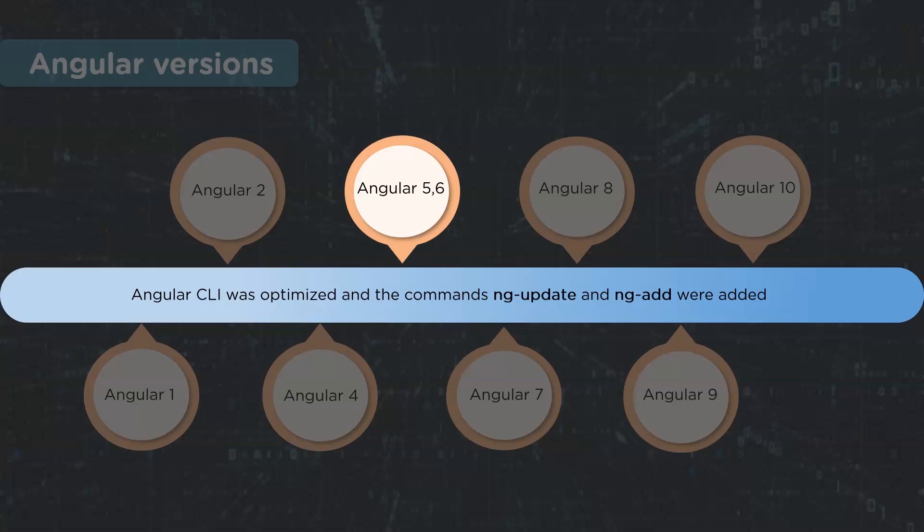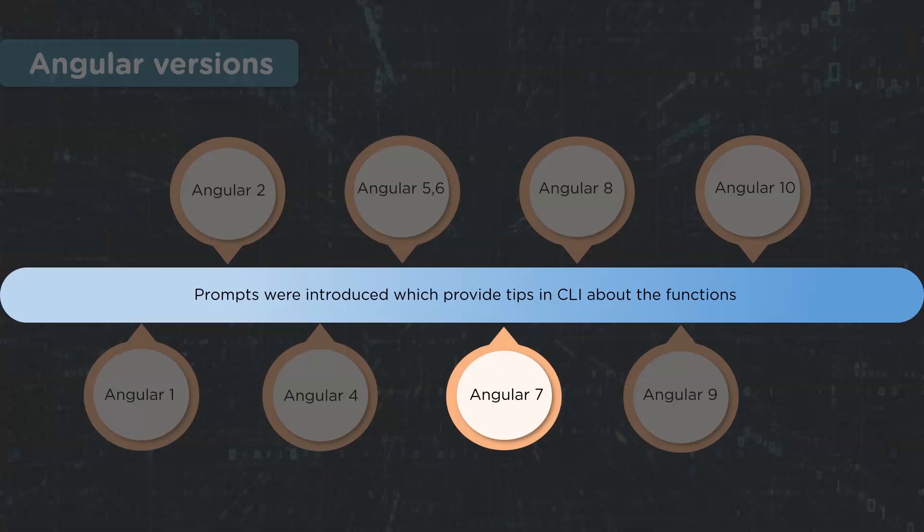Angular 5 concentrated on making Angular smaller and faster to use. HTTP client library, build optimizer, and compiler improvements were made. With Angular 6, the Angular CLI was released and new commands like ng update and ng add were introduced.